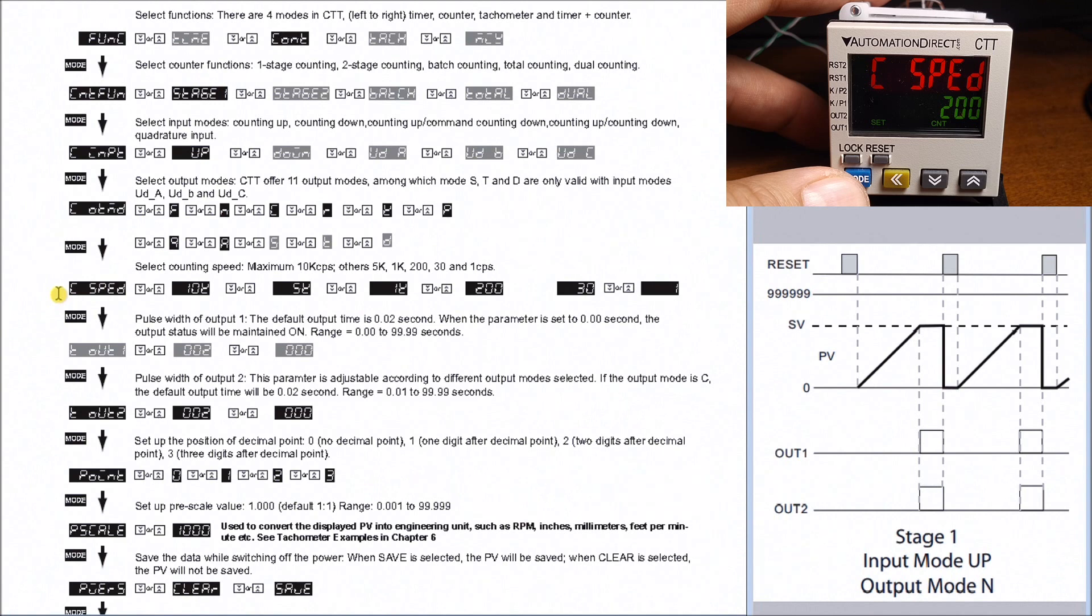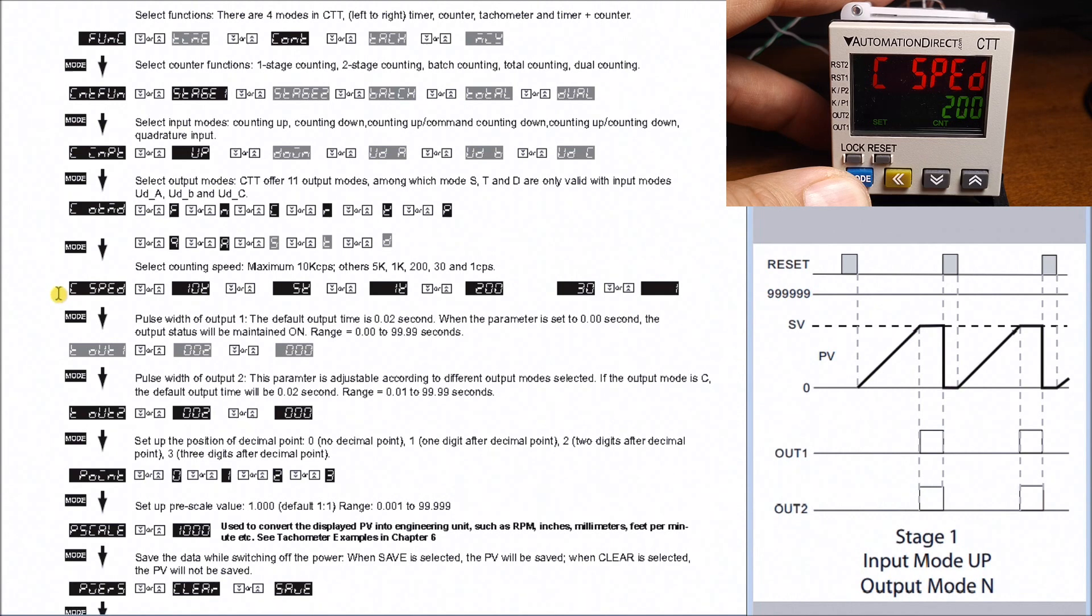Our count speed really indicates or is determined by what we actually have coming into the actual counter itself. In our particular case, we're tracking this off of a relay, so we're going to set it for 200, which we have set here.